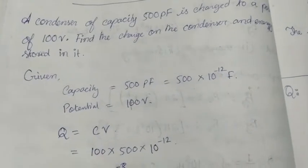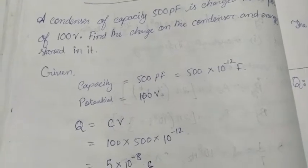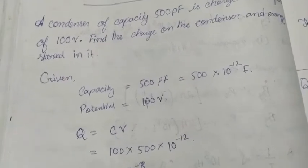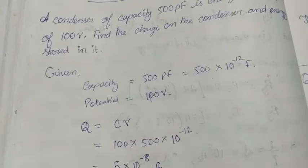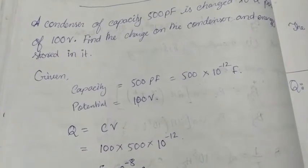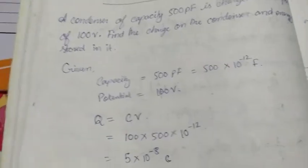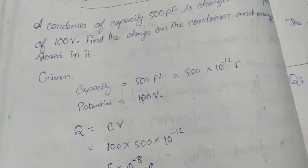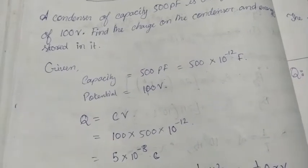As I am solving previous year question paper numerical problems. So here the question states: A condenser of capacity 500 pF is charged to a potential of 100 V. Find the charge on the condenser and the energy that is stored in it.